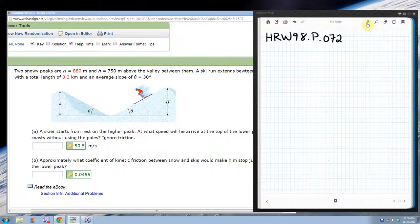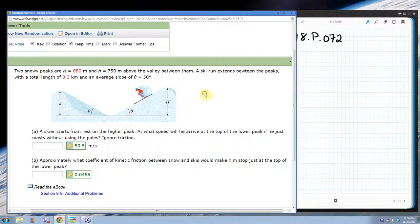This is HRW 98P072, the skier. So we've got two hills. They give us the height of the hills. A ski run extends between the peaks with a total length of 3.3 kilometers and an average slope of 30 degrees.